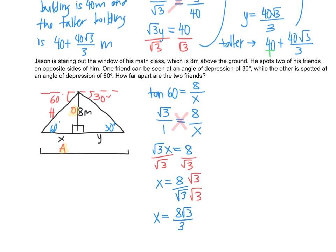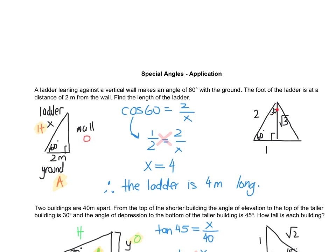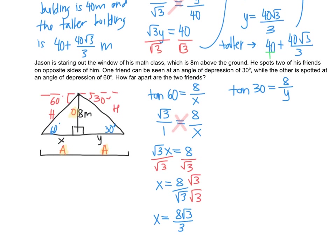In the next triangle, I'm going to use 30 as my reference angle. 8 is still opposite, but this time the adjacent is y and the hypotenuse is the other unlabeled side. Again, I'm given opposite and looking for adjacent, so once again we are using tan. Tan 30 equals opposite 8 over adjacent y. From the triangle, tan of 30 is opposite 1 over adjacent root 3, so 1 over root 3, and that equals 8 over y. Cross multiplying: 1 times y is y, and 8 times root 3 gives y equals 8 root 3.